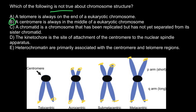Answer D: the kinetochore is a site of attachment of the centromere to the spindle apparatus. Yes, at this point on the centromere, the spindle apparatus attaches in order to separate the two sister chromatids so that each ends up in a different cell — whether during mitosis or meiosis.